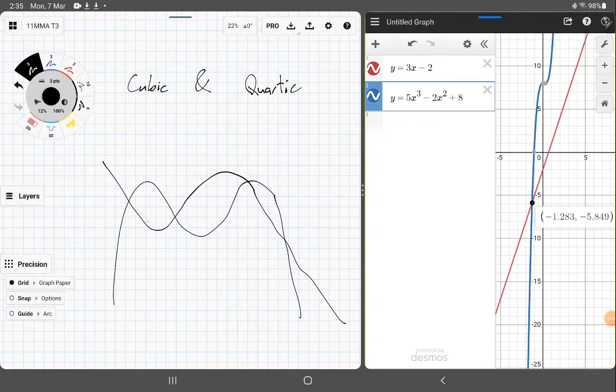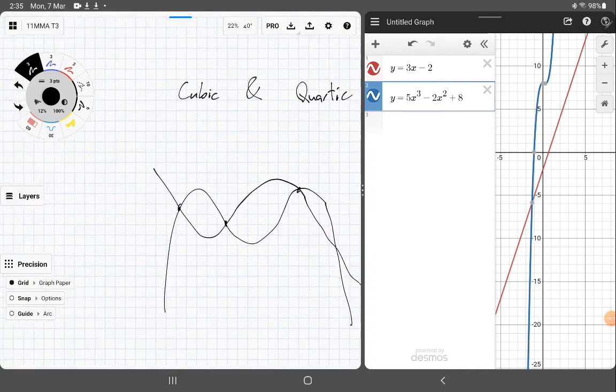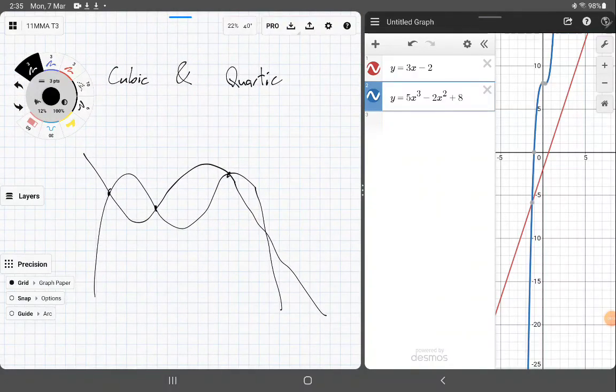And so theoretically, you can get up to four solutions with a cubic and a quartic. And with two quartics, once again, you're limited to only four solutions. So just kind of playing around with that idea. Alrighty, so the next one, we'll do it with a calculator.